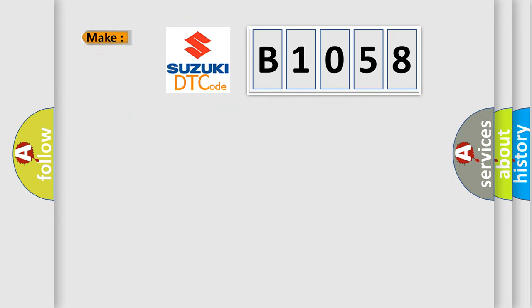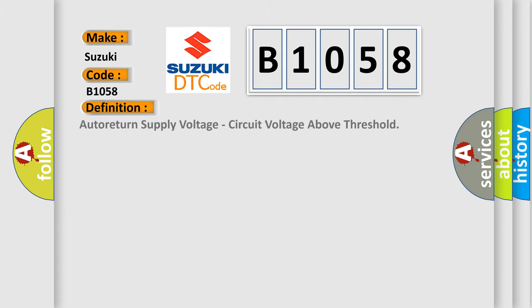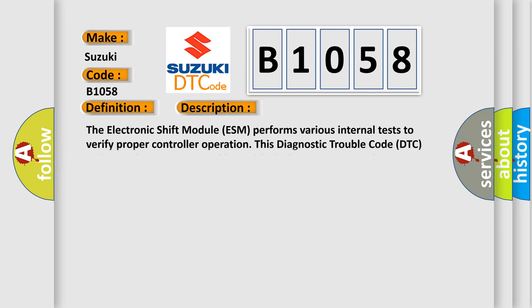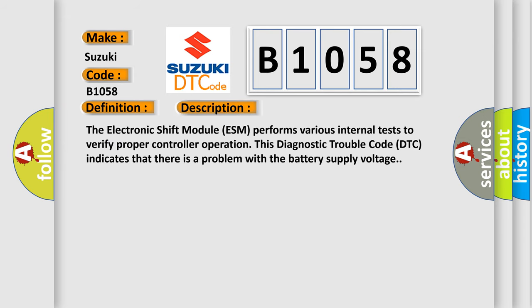We now know how the diagnostic tool translates received information into a more comprehensible format. So, what does the diagnostic trouble code B1058 interpret specifically? The basic definition is: auto-return supply voltage, circuit voltage above threshold. The electronic shift module (ESM) performs various internal tests to verify proper controller operation. This DTC indicates that there is a problem with the battery supply voltage.